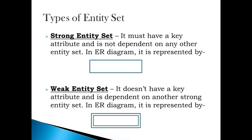There are two types of Entity Set: Strong Entity Set and Weak Entity Set. Strong Entity Sets are those which have a key attribute and are not dependent on any other entity set. The representation of these Entity Sets in the ER Diagram is shown on the screen.